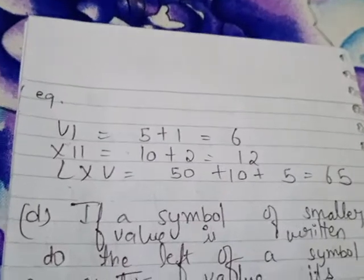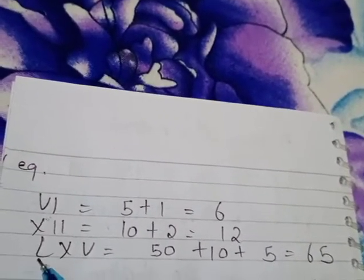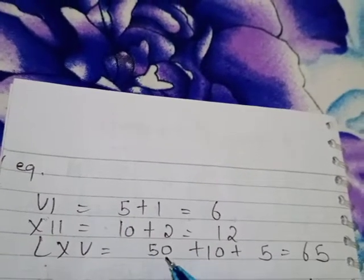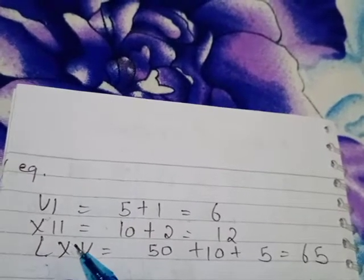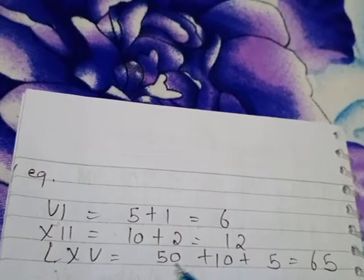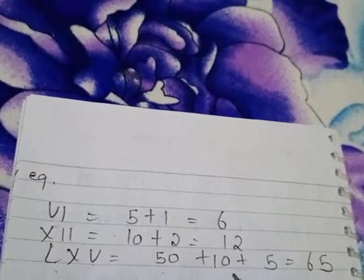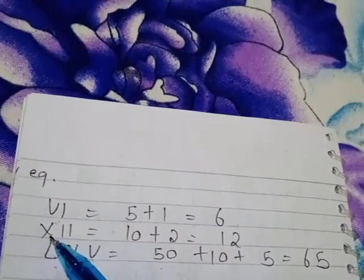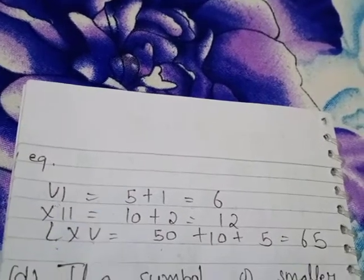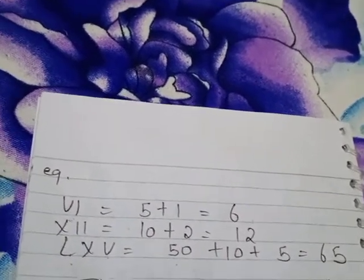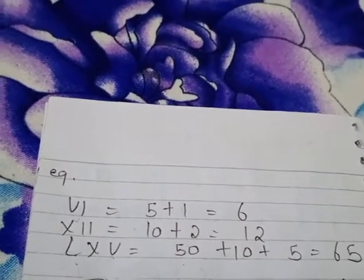You can see three examples written for rule three. L (50) with a smaller value to its right gets that value added. Similarly, another example shows 5 as the bigger value with a smaller value added to it. And X (10) as the bigger value — a smaller number added gives the result. Whenever the smaller number is to the right side, it is added.